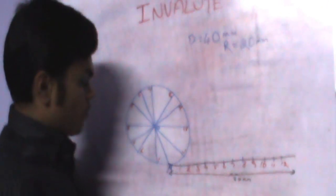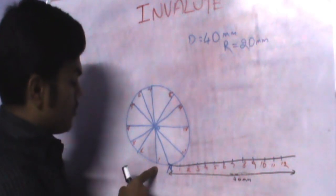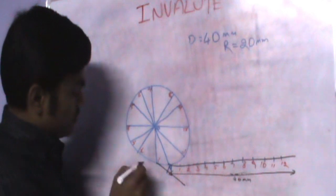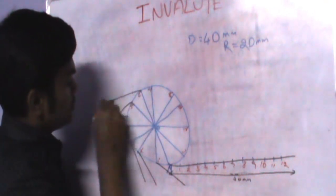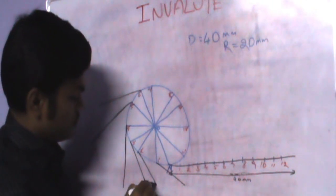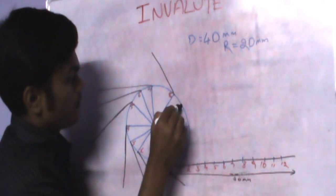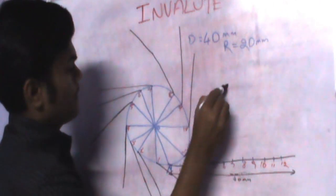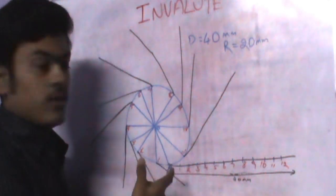Now here is the critical step — how we are going to draw the Involute. From each division point on the circle (1 dash, 2 dash, 3 dash, and so on), draw a tangent to the circle. For each and every point we have to draw the tangent. This is how the tangent from each point will look.